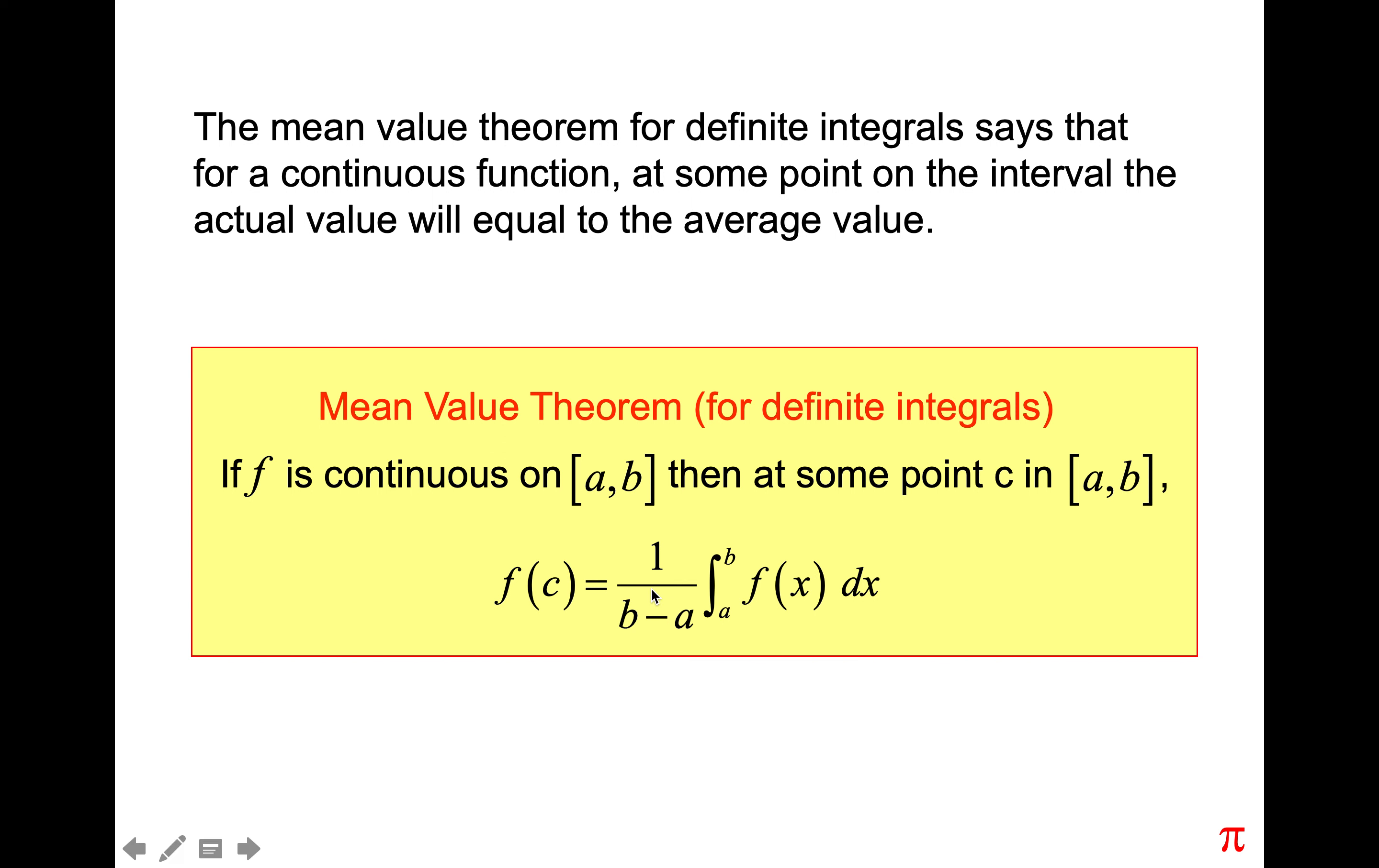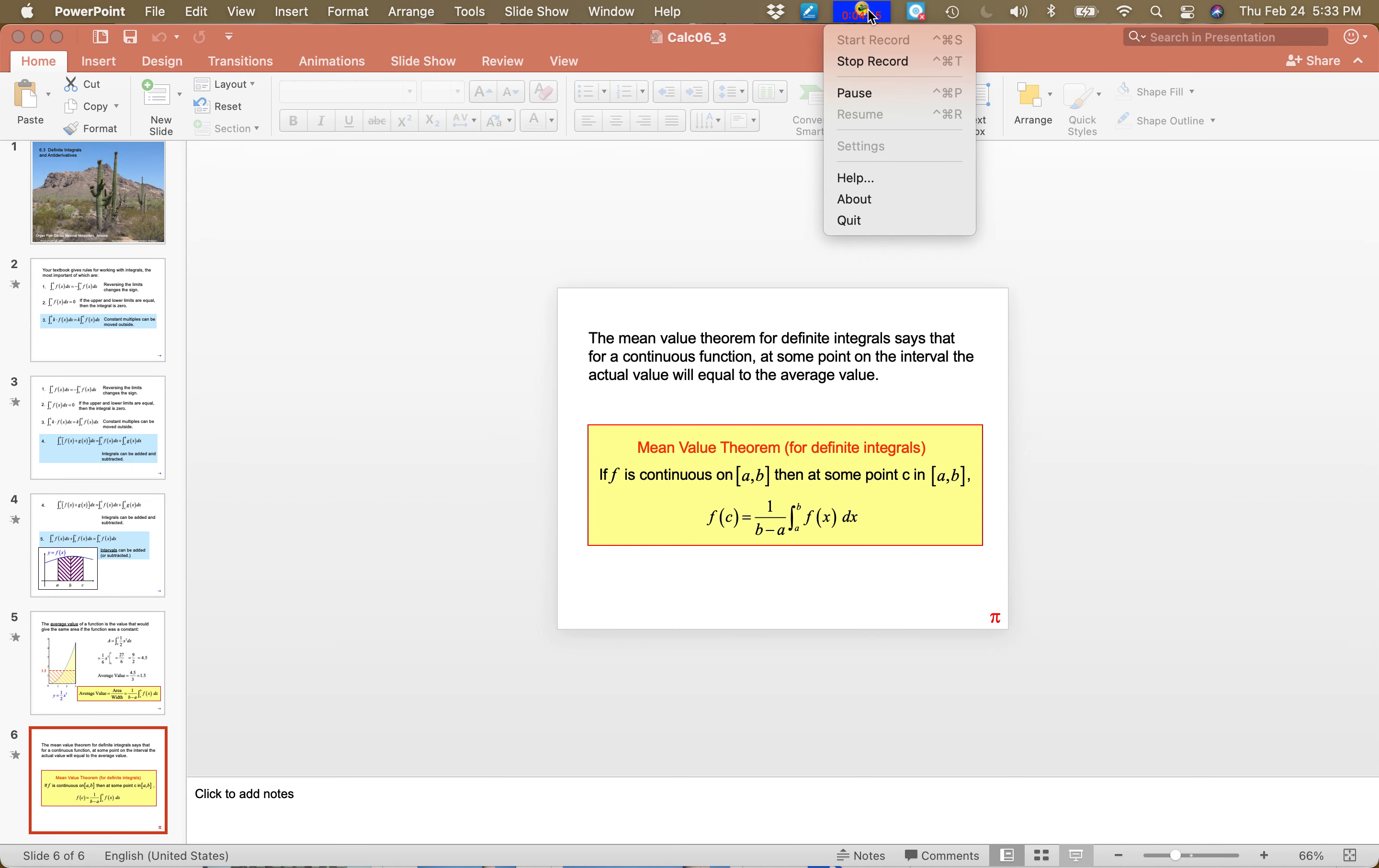Well, this is the same kind of deal, except this is for integrals. So there does have to be some place where the actual value is equal to the average value of the function. So it looks like this. If f is continuous on a closed interval, then at some point c within that closed interval, this has to hold true. And we're going to see some examples of how to use the mean value theorem.